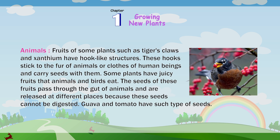Animals: Fruits of some plants such as tiger's claw and xanthium have hook-like structures. These hooks stick to the fur of animals or clothes of human beings and carry seeds with them. Some plants have juicy fruits that animals and birds eat. The seeds of these fruits pass through the gut of animals and are released at different places because these seeds cannot be digested. Guava and tomato have such type of seeds.